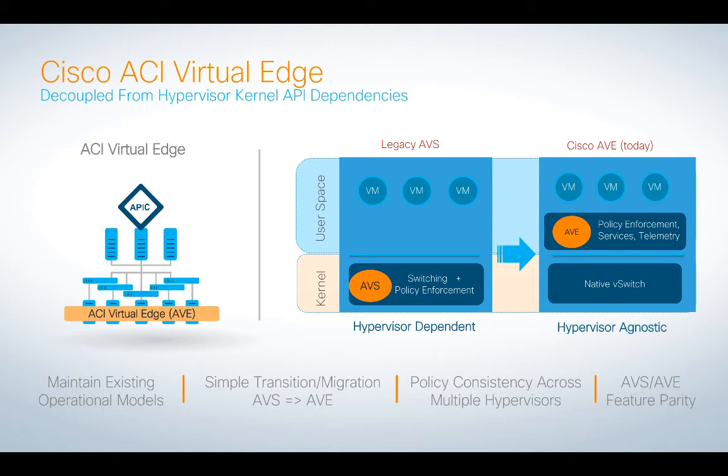Recently, VMware made a public announcement that they would be closing off their kernel to all third-party switches. And so, after a certain version, AVS would no longer work.